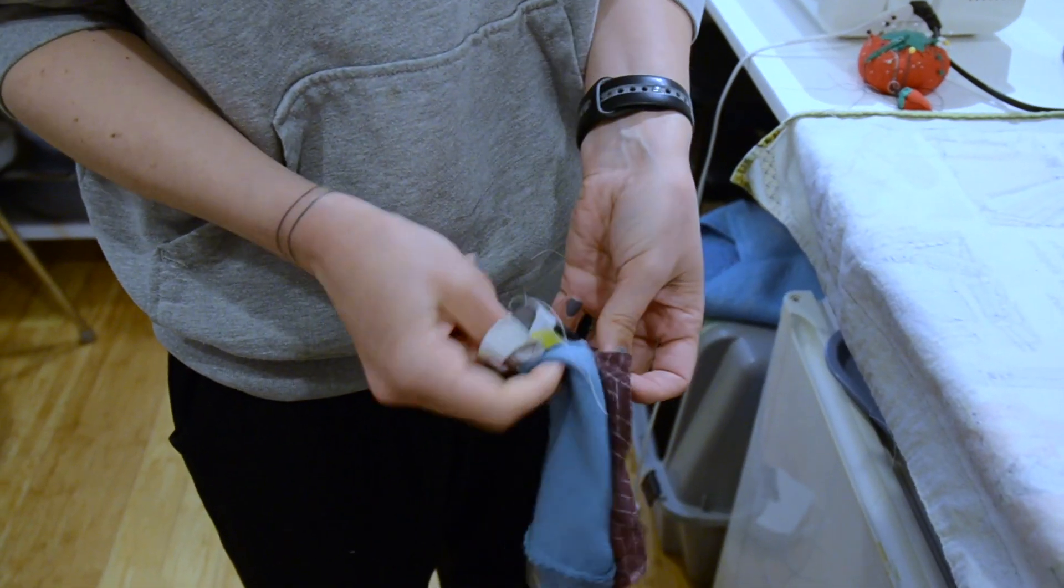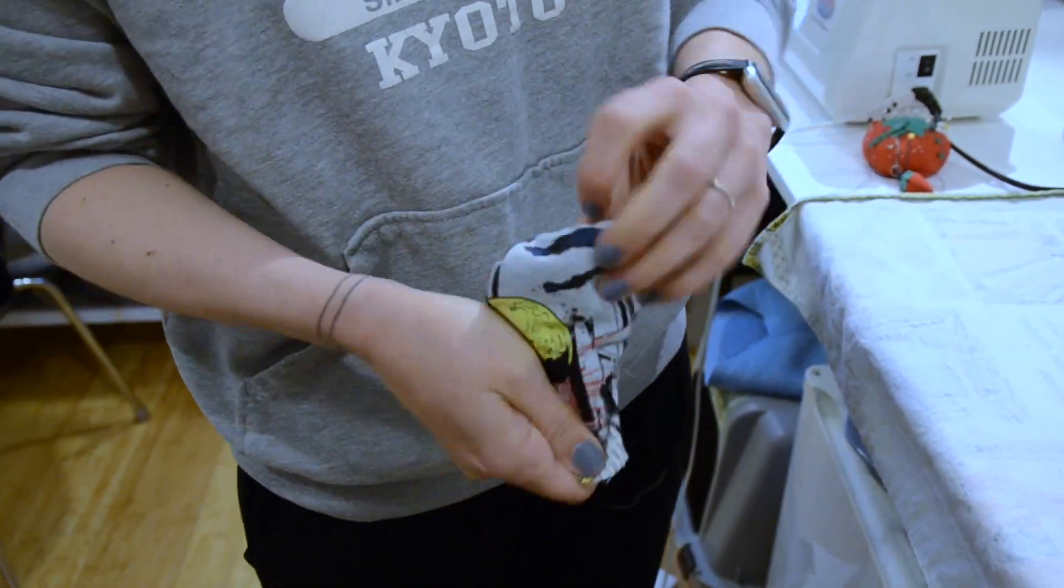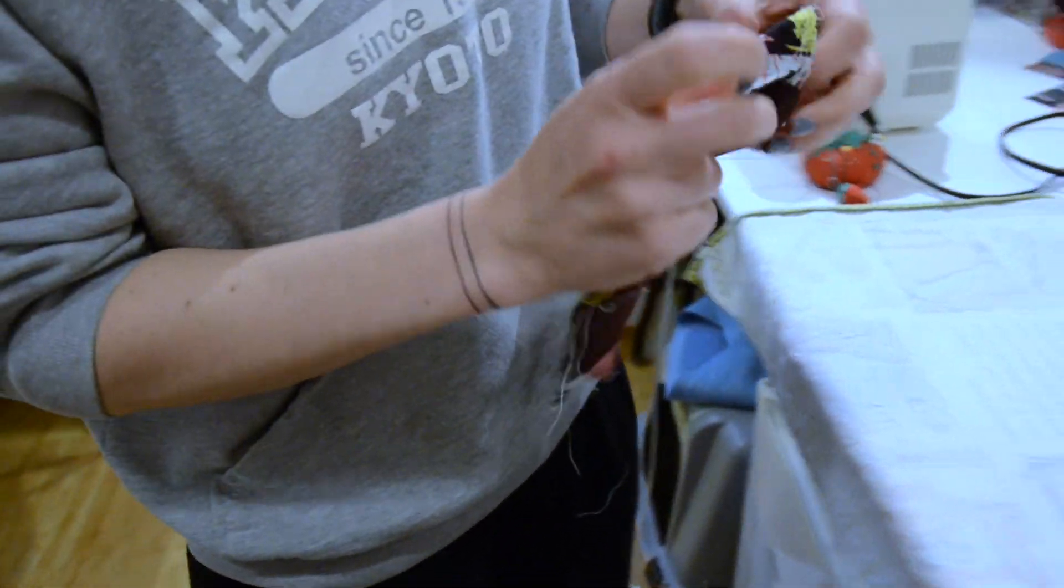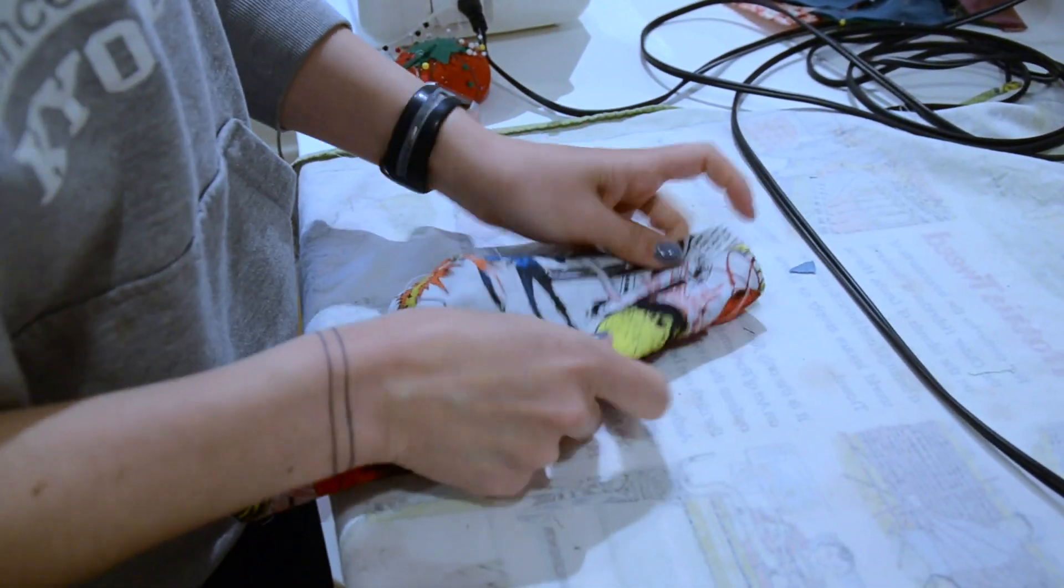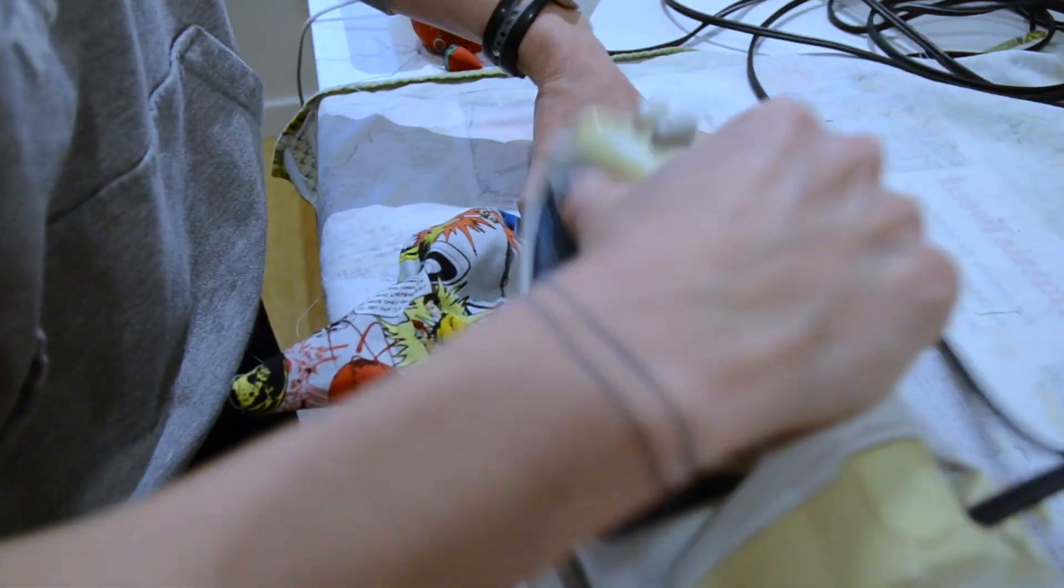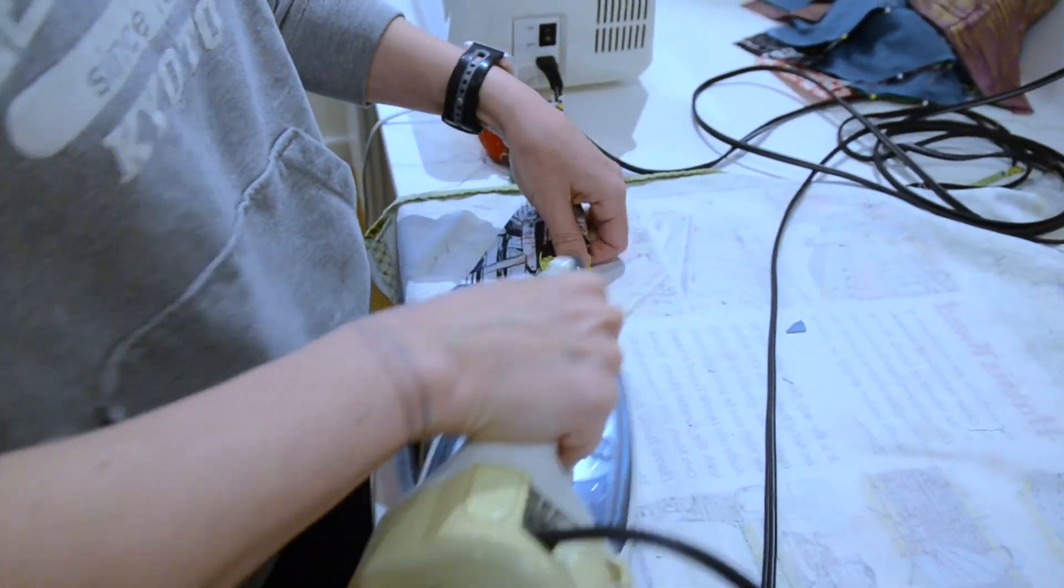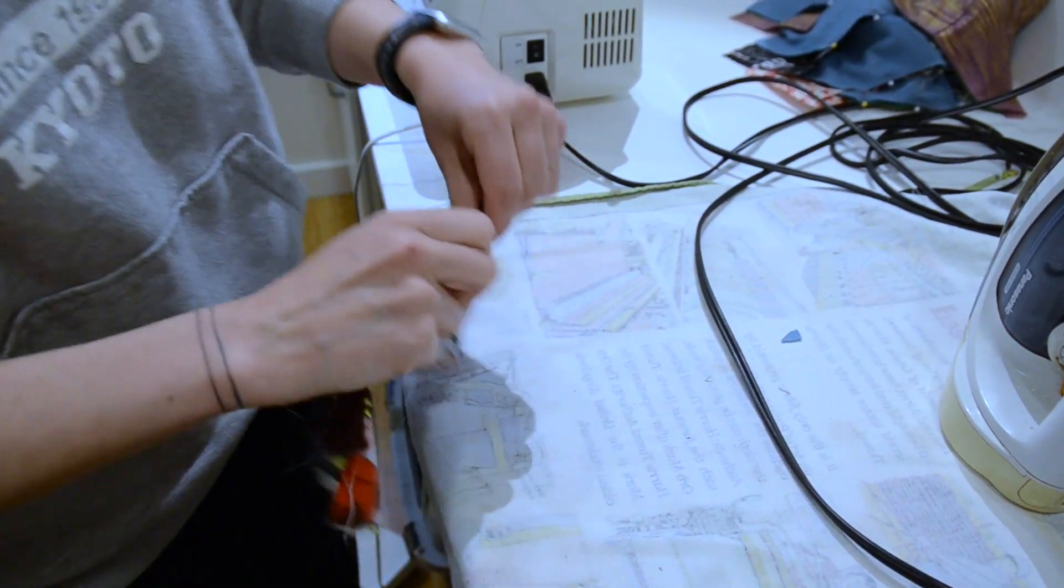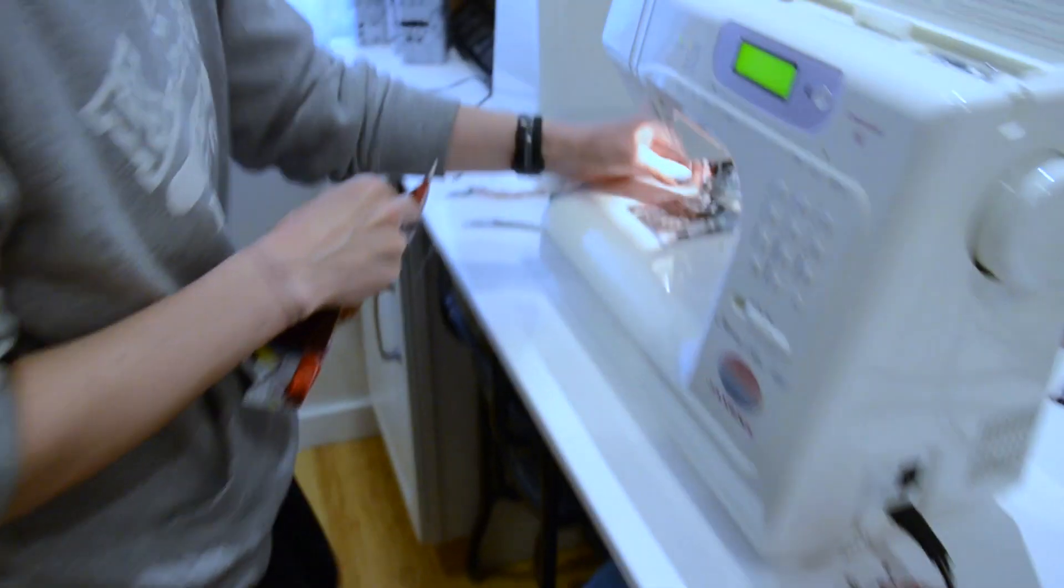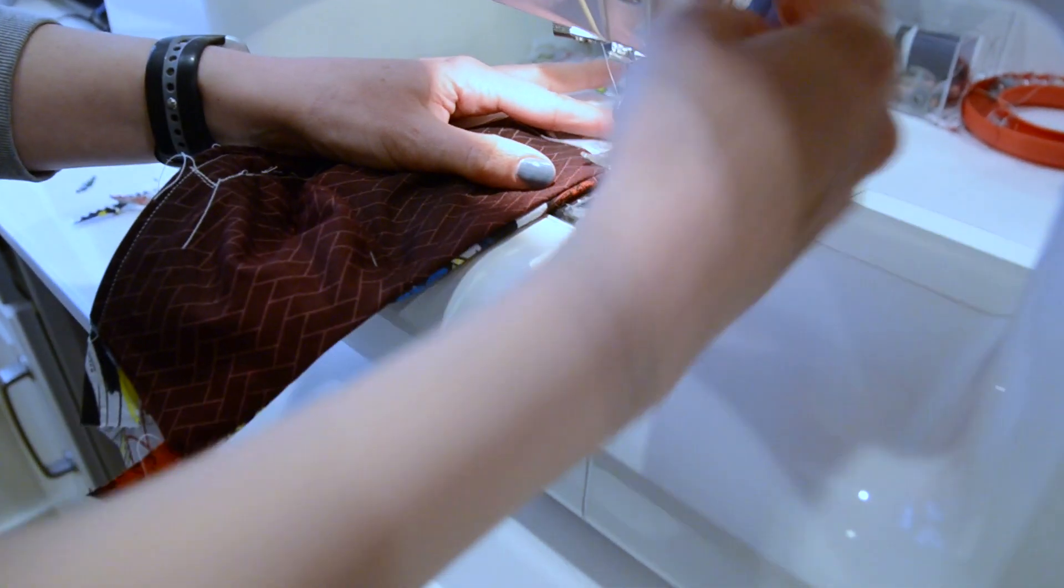We're going to turn it inside out. Once again with that hot iron, flatten this out. Believe it or not, we are almost done. Once more we're going to sew a nice little top seam, keep it all flush, make it look nice. After all, these are going to be the height of fashion.